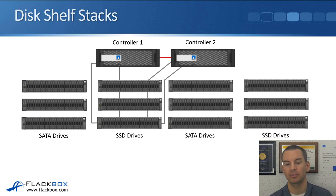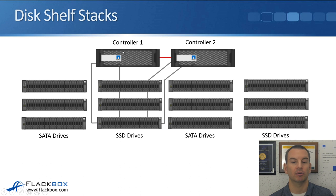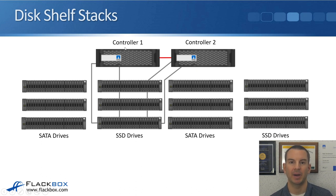For our example, let's say we have another couple of stacks — another stack of SATA drives and another stack of SSD drives. The first SATA and SSD stacks are owned by controller one, meaning traffic always goes from the SAS connections on controller one, with controller two as the high availability backup. For the second SATA and SSD stacks, they're owned by controller two, with controller one as its backup. I'll talk about ownership more in the next lecture.